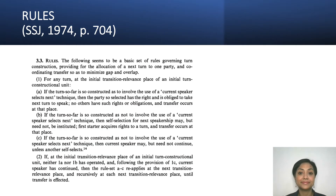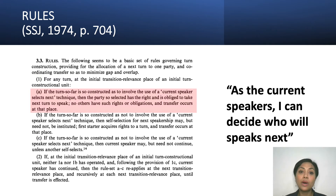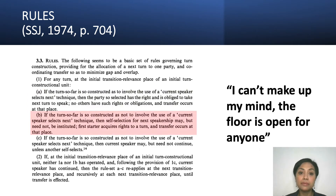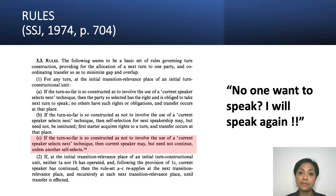Here are the rules. At the highest level, the rules consist of two: Rule 1 and Rule 2. Rule 1 consists of three subsets: Rule 1A, 1B, and 1C. Rule 1A basically says that a current speaker in a conversation has the authority to select the next speaker, and once a person has been selected as the next speaker, he or she has the ultimate authority to speak next. Rule 1B basically says that if the current speaker does not select the next speaker, any speaker can take the floor. Rule 1C says that option includes the current speaker.